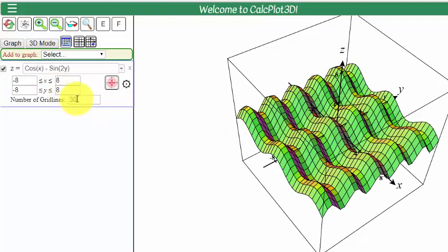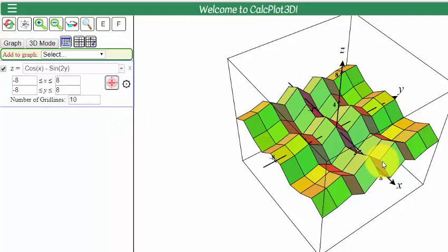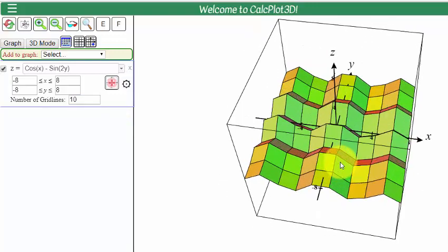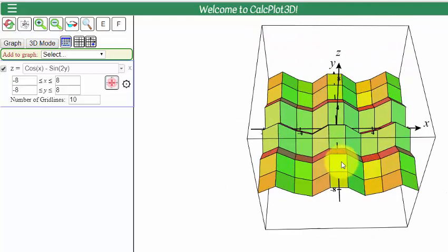I can also change the number of grid lines from, say, 30 to 10. And the grid lines are the number of these curves, these little sections. You'll see these little rectangles. And it's how the surface is sketched. So if I go 30 to 10, we'll see how that looks. Now we'll see it's much less smooth, but it kind of shows you what's going on.